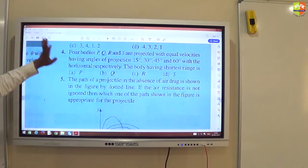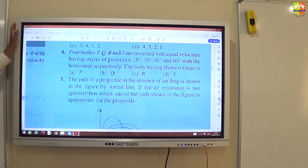Four, answer is P. The body having shortest range - you know the formula, u²sin2θ/g. Sine 2θ is lowest for which of these angles? Sine 2θ should be minimum.